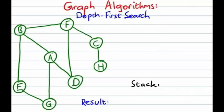The depth-first traversal, in this case, is going to start out at the vertex A. The first thing that we're going to do is take vertex A, push it onto the stack, visit it, and mark it as visited. We then look at the vertex at the top of the stack, A, and all of the vertices adjacent to it that haven't yet been visited — that's B, D, and G.